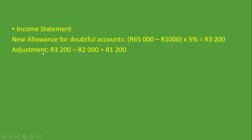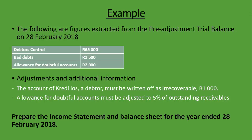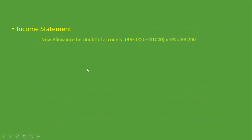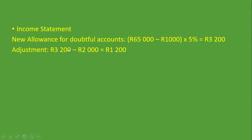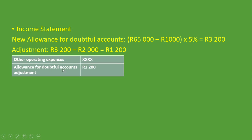Now we calculate the Adjustment which will go into the Income Statement. The new Allowance for Doubtful Accounts of R3,200 minus the old Allowance of R2,000 gives an Adjustment of R1,200. The new Allowance has increased from the previous period, so we put it under Other Expenses. Under Other Operating Expenses, we record Allowance for Doubtful Accounts Adjustment at R1,200. That is how you record the Allowance for Doubtful Accounts Adjustment in the Income Statement.